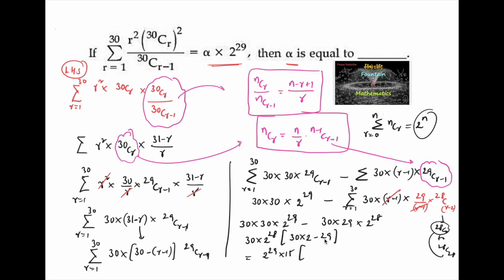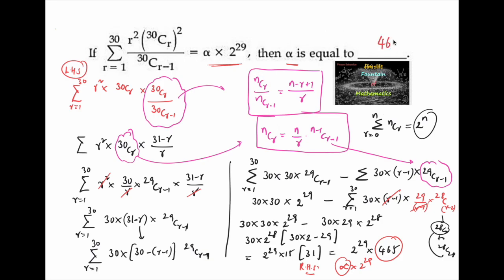So we get 2²⁹ · 31 · 15 which gives 465. Comparing with the right hand side α · 2²⁹, we can say α = 465. The value of alpha is 465.